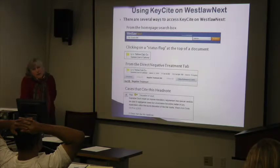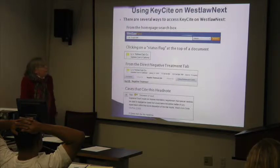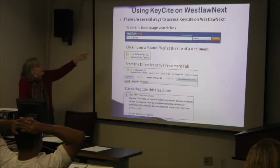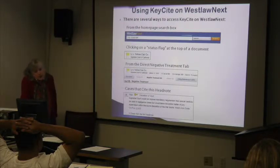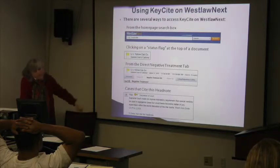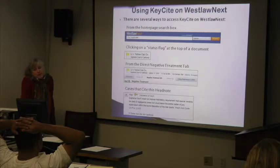You can use Keysight on WestlawNext in a number of ways. You can search directly from the home page using 'KC:' followed by your case cite, or you can click on the status flag at the top of the document — yellow in this case for a yellow flag — or you can go directly from the negative treatment tab that Emily showed you.